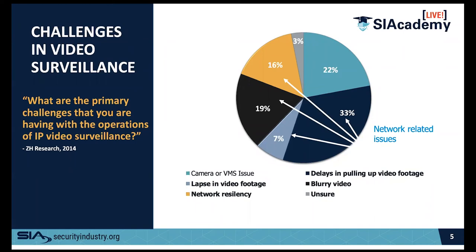22% of overall users reported VMS or camera issues, and I would tell you that number is skewed. Whenever you look at a problem in a VMS platform — whether it be artifacting, latent PTZ control, loss of video, all the things we just talked about — you typically place your call into the VMS vendor or the IP camera vendor. Nine out of ten times, if it can't be resolved quickly, it's underlying network infrastructure resource restriction manifesting that problem. So while 22% of the time you may be calling the vendor for VMS or camera issues, it may, in fact, be the infrastructure underneath it.